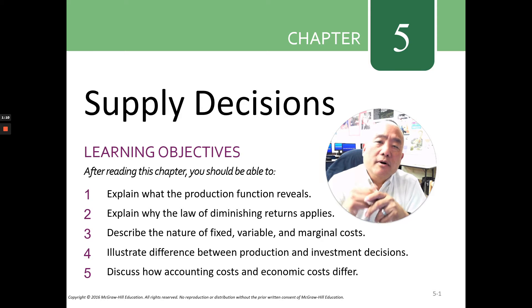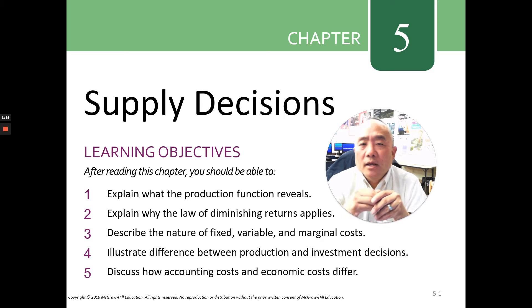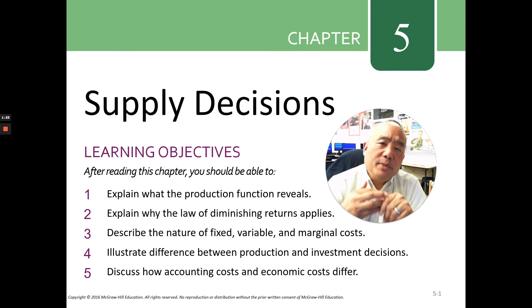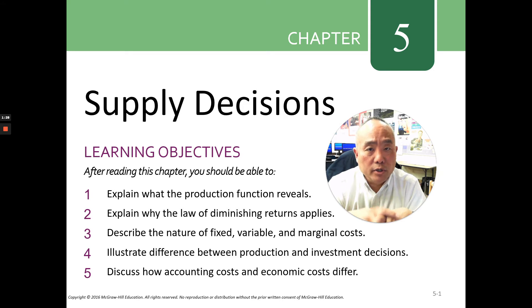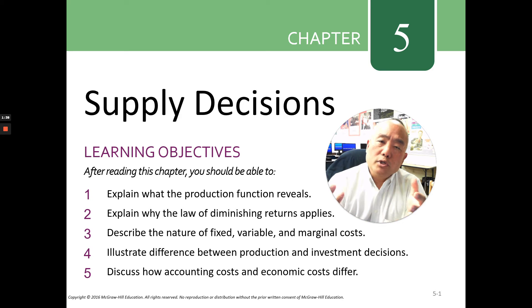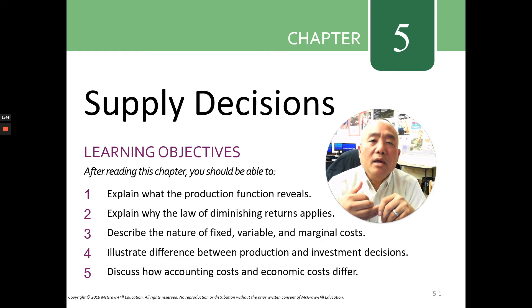Number three, describe the nature of fixed, variable, and marginal costs. Your fixed costs are items such as your plant and equipment, property taxes — expenses that you must pay for regardless of how much output you produce. Your variable costs, on the other hand, are very much dependent on how much you choose to produce, and include items such as labor and materials.